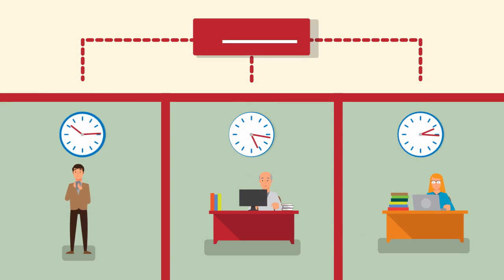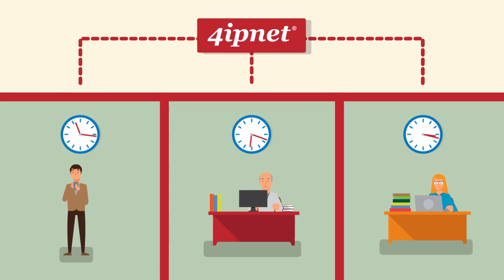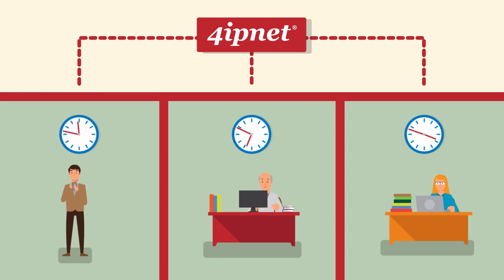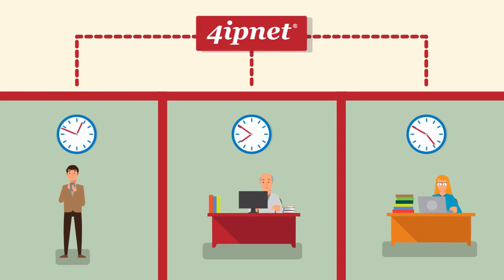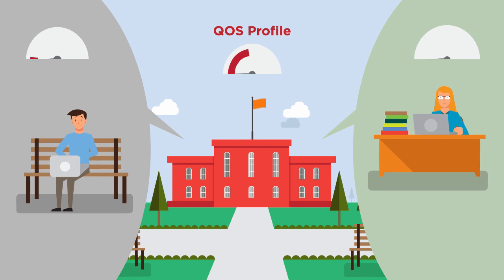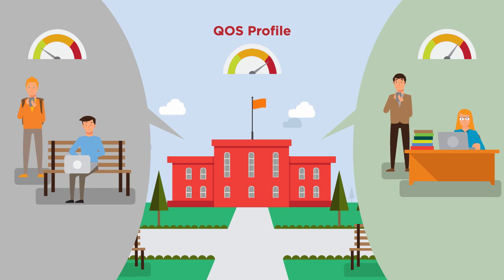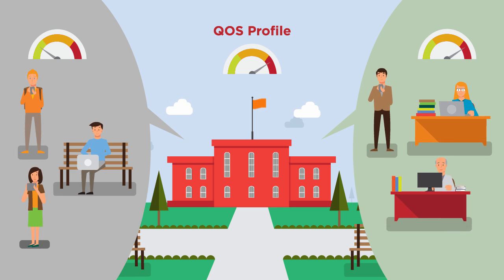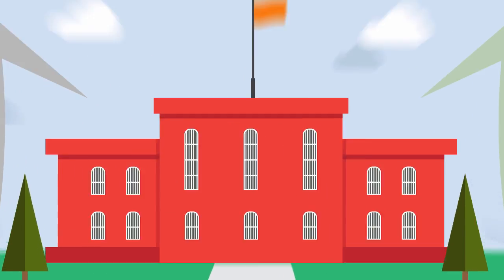For each role you can set up unique access policies with multiple profiles depending on schedules. The QoS profile allows you to allocate the total network bandwidth by setting a bandwidth limit for each individual user or for all the users in a particular role.